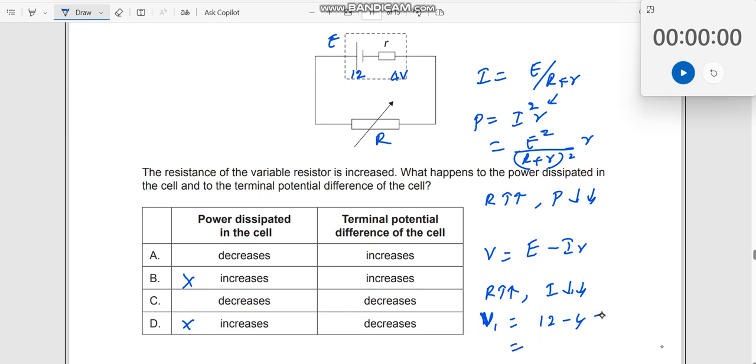So initially what was the value of V1? V1 was 8 volt. Now if this becomes 3, then this becomes 12 minus 3 becomes 9 volt over here.